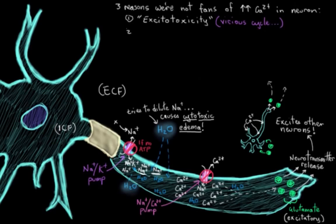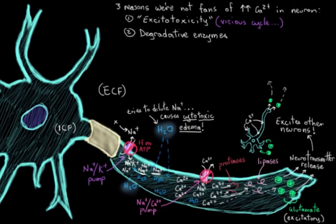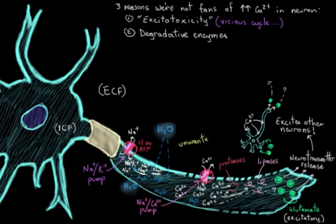The second reason we don't want too much calcium in our neurons is because too much calcium will activate degradative enzymes. So the calcium will activate proteases, which break down proteins inside your neuron. And the calcium will activate lipases, which break down the neuron's cell membrane. Obviously that sounds pretty bad. So you can imagine that if your cell membrane starts to break down, all sorts of other ions and harmful chemicals will enter the neuron and start to cause damage. So that's no good.